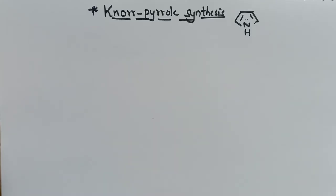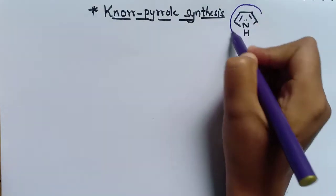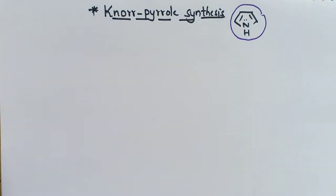Hi everyone, welcome back to our channel. In this video we are going to learn about the Knorr pyrrole synthesis. We already know that pyrrole is a 5-membered ring where one of the carbons is replaced by nitrogen. It is a very important method to synthesize this pyrrole.